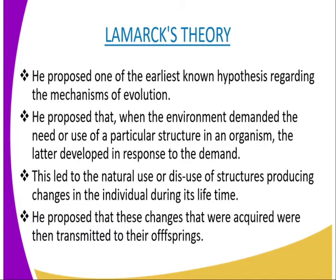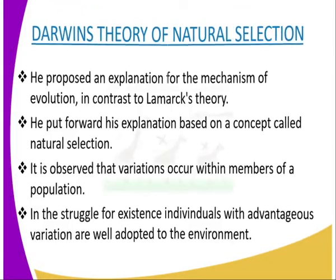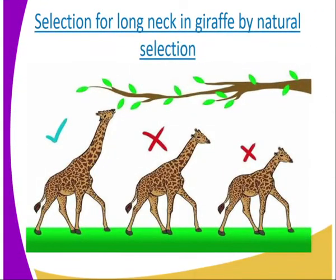These new forms acquired certain advantages over the ancestral forms in the exploitation of a particular ecological niche. He cited the example of development of the long neck of the giraffe, which developed as a result of ancestral forms reaching towards higher levels of vegetation in competition with other browsers for food. The long neck so developed was passed on to successive generations, which then gave them advantage over the short-necked forms. Eventually, new long-necked species were formed.